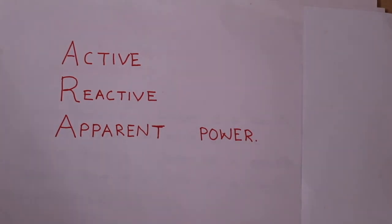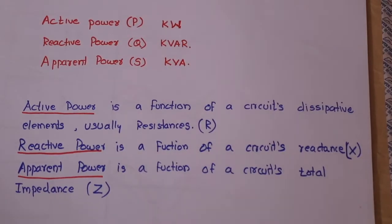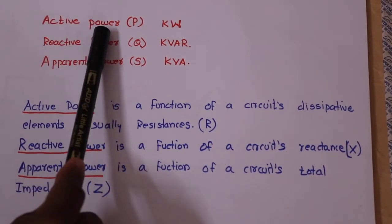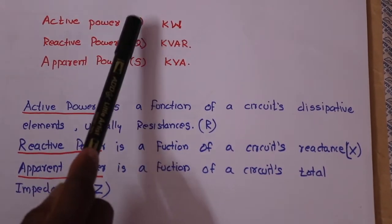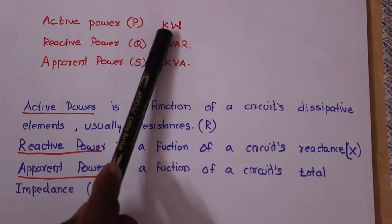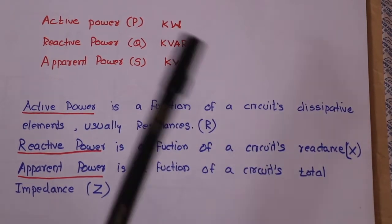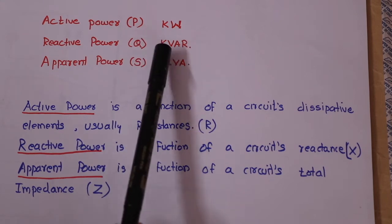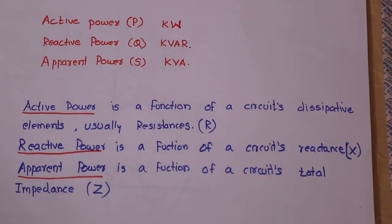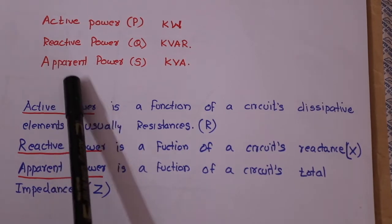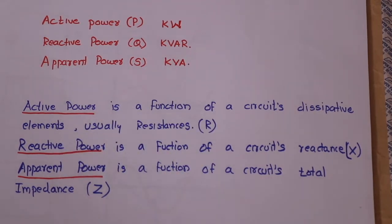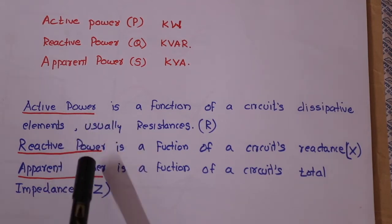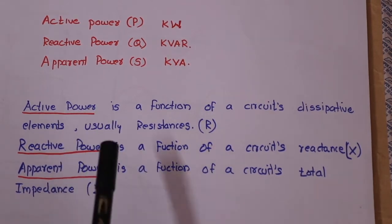Active power is represented by the symbol P, and its unit is kW. Reactive power is represented by Q, and its unit is kVAR. Apparent power is represented in kVA. Active power and apparent power share a similar definition basis.